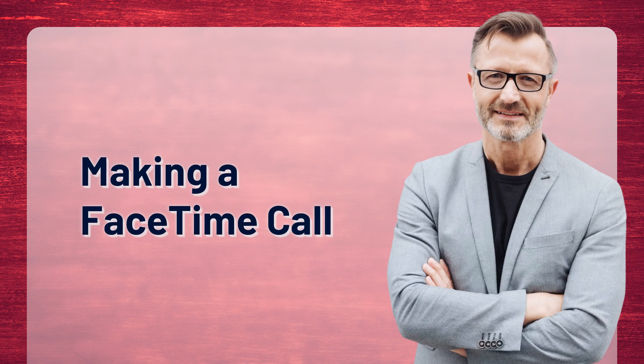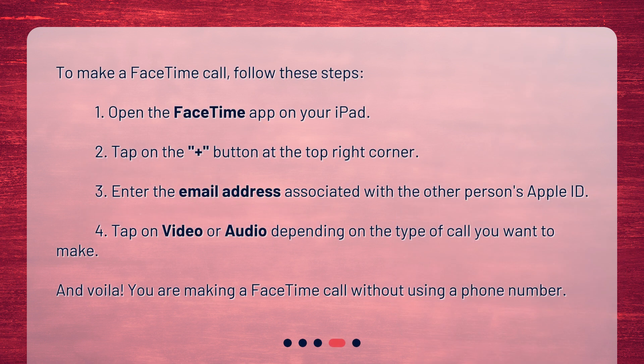Making a FaceTime call. To make a FaceTime call, follow these steps. One: open the FaceTime app on your iPad. Two: tap on the plus button at the top right corner. Three: enter the email address associated with the other person's Apple ID. Four: tap on video or audio depending on the type of call you want to make. And voila! You are making a FaceTime call without using a phone number.